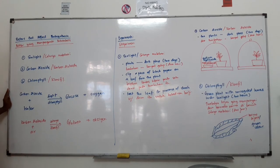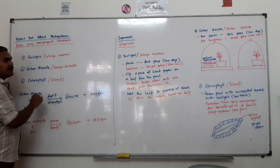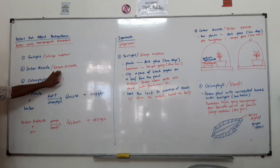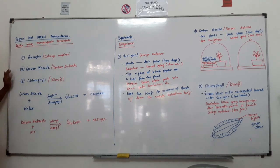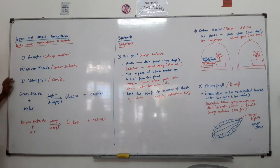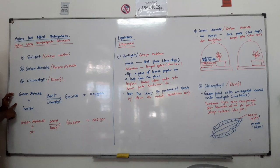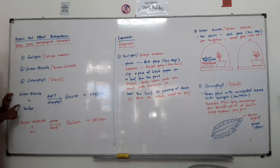Cahaya matahari diperlukan untuk menyerap tenaga, untuk memastikan bahawa tumbuhan tersebut mendapatkan tenaga dan boleh melakukan proses fotosintesis. Carbon dioxide kita akan dapatkan daripada atmosfera, dan tumbuhan hijau akan menggunakan carbon dioxide ini untuk melakukan proses fotosintesis. Selain daripada itu, tumbuhan hijau akan mengandungi sejenis pigmen hijau dalam daunnya yang dikenali sebagai chlorophyll untuk melakukan proses fotosintesis juga.